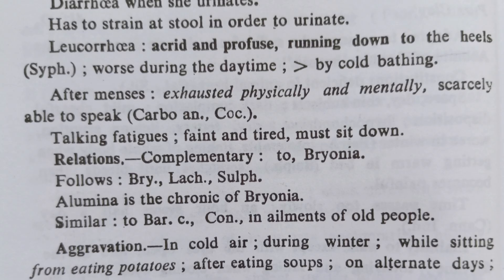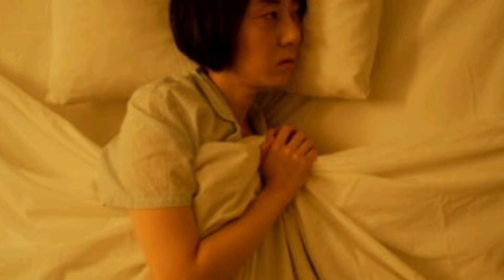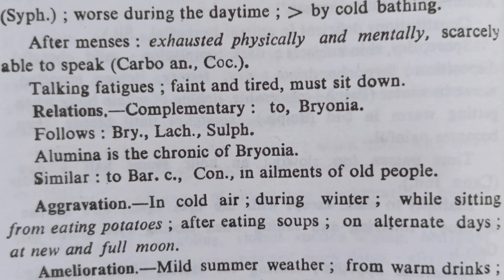Next important keynote of Alumina is leucorrhea — acrid and profuse, running down to the heels like Syphilinum, worse during the daytime, ameliorated by cold bathing. After menses, the patient becomes so weak she can barely speak. Carbo animalis and Cocculus also show this state after menses. After menses: exhausted physically and mentally, scarcely able to speak; talking fatigues, faint and tired, must sit down.